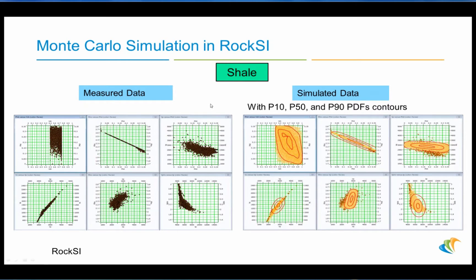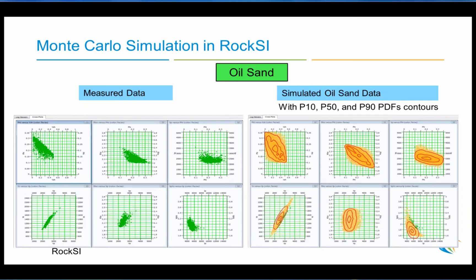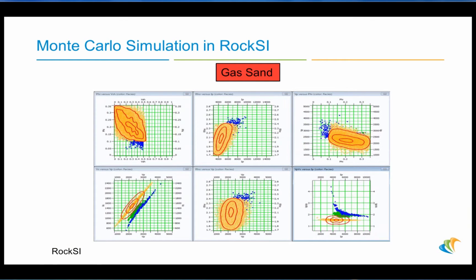Let me show you plots where we have done this in Rock SI, going through it lithophases type by lithophases type. Here we see measured data for the shale lithophases, and then simulated data for the shale in various cross-plots: P-velocity, shear velocity, P-velocity vs. density, P-impedance, and Vp/Vs ratio. Here it is for water sand with the simulated water sand data with the P10, P50, and P90 PDF contours. Here's the oil sand case. And here's a new one — gas sand. There was no actual gas sand data, but we simulated for the gas sand using the appropriate petroelastic model.